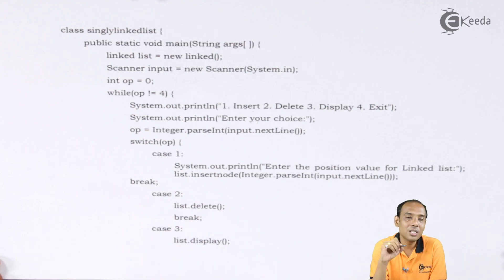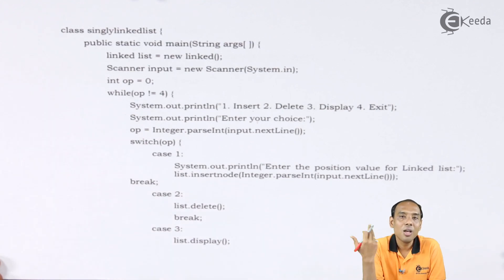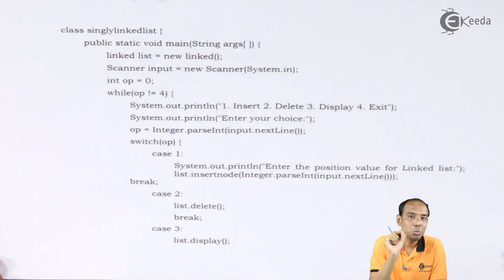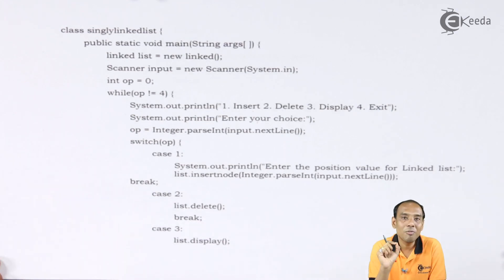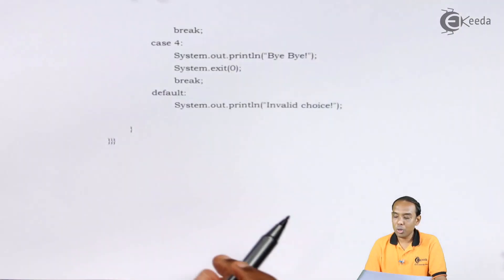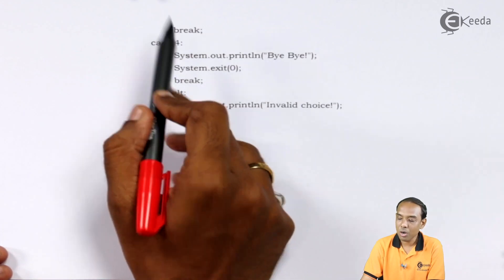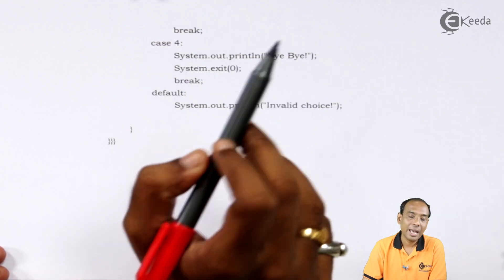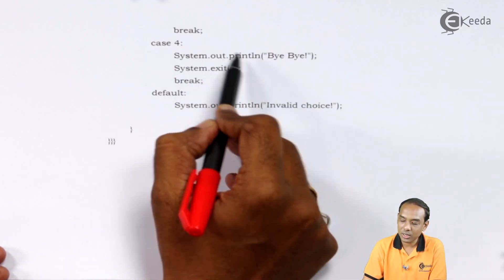Then I write down case number three, which is for displaying the values. I call the display function using the linked list object: I write down list dot display. The display function is going to display all the nodes with their values. Once done with the display function, I write case number four which is the exit case. I write bye-bye and then system dot exit to exit the system.